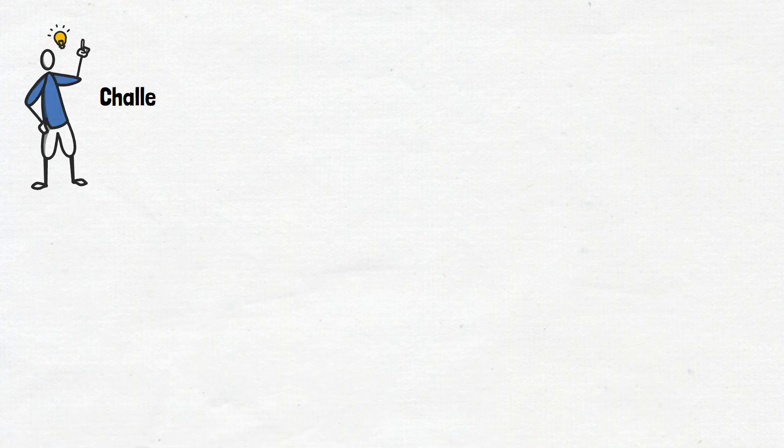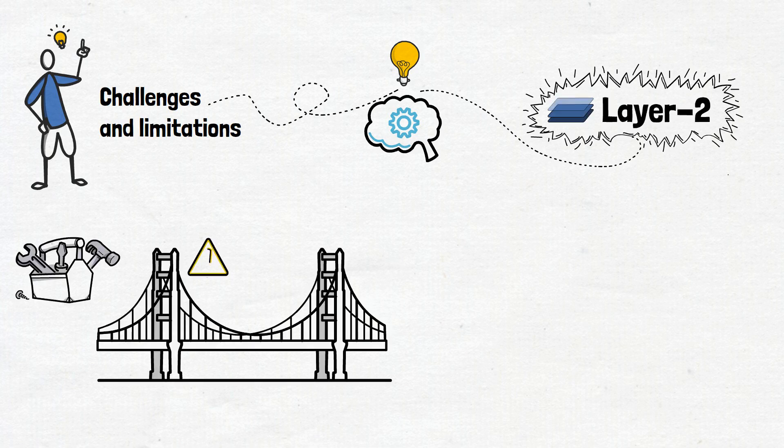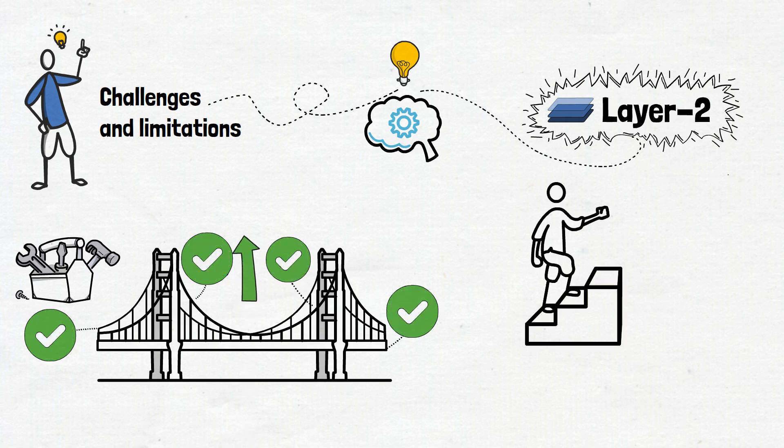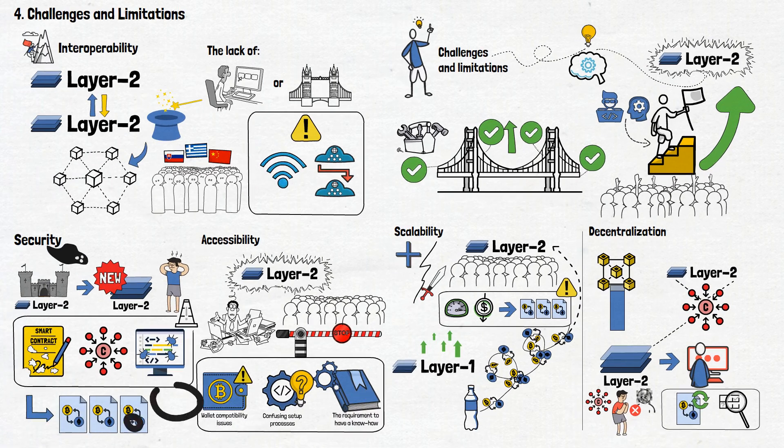Acknowledging these challenges and limitations helps us understand the complexities involved in perfecting Layer 2 solutions. It's like building a sturdy bridge. Each obstacle provides the opportunity to reinforce the structure and improve its resilience. Such challenges serve as stepping stones for developers and innovators to refine these solutions further, ensuring they evolve to meet the demands of a growing crypto community.